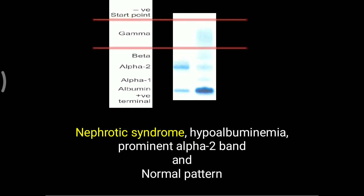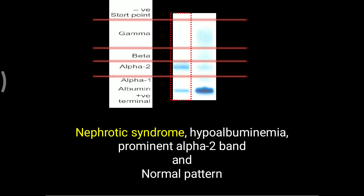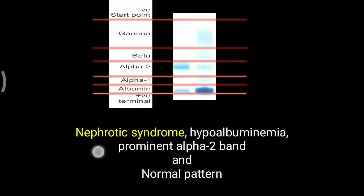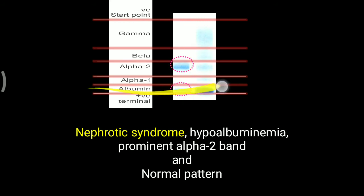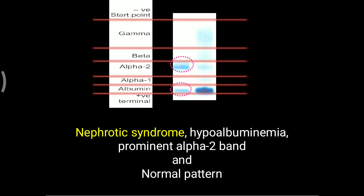In nephrotic syndrome, the nephrons are damaged. The first protein to be excreted is albumin, which is lost in the urine, leading to hypoalbuminemia. Comparatively, bigger size proteins remain inside the blood, making the alpha-2 band prominent. Comparing the nephrotic syndrome pattern with the normal pattern, the prominent alpha-2 band and decreased albumin band indicate hypoalbuminemia, diagnosing nephrotic syndrome.